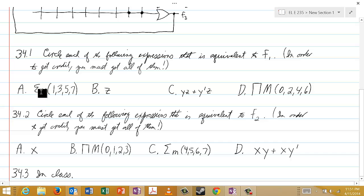And so the choices are the sum of the min terms 1, 3, 5, 7. Simply the variable Z is the answer for B. For C, it's YZ or Y'Z.